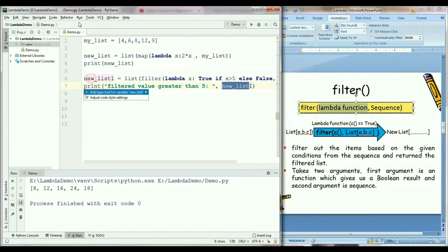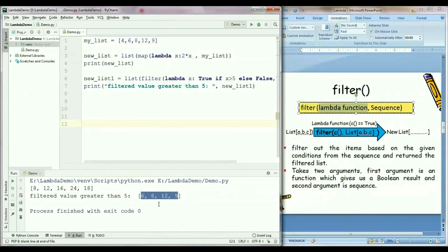Just save this and let's run the program. You can see the result in console. You can see only the filtered values which are greater than 5 from my list which are 6, 8, 9 and 12.